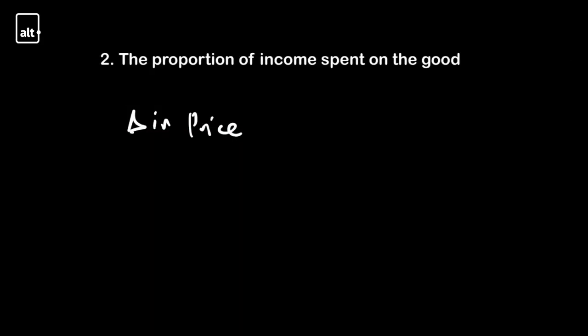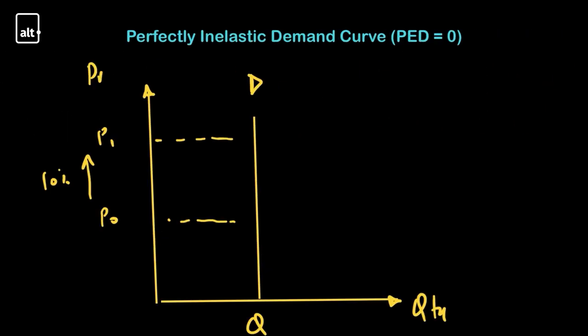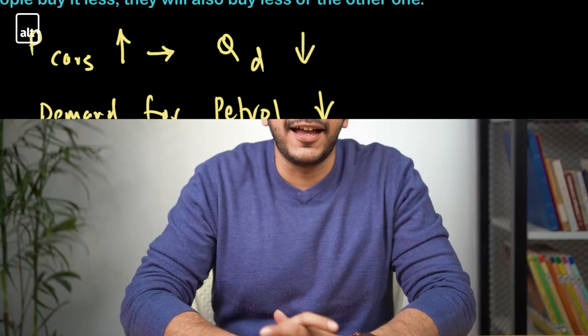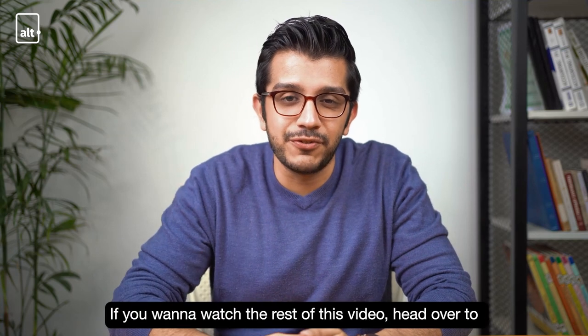For an expensive good which takes up a large proportion of your income — if I'm selling a perfectly inelastic good, remember the example for a perfectly inelastic good is a life-saving drug — what if your XCD is such that the value of XCD in this case is minus 1.5?